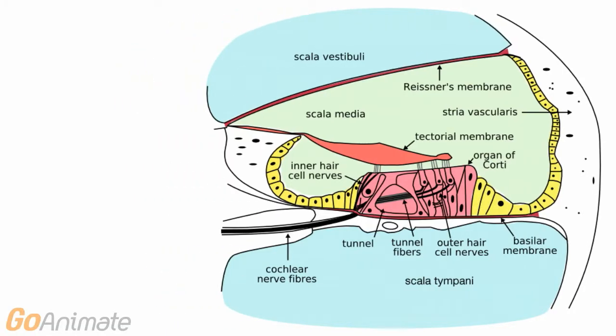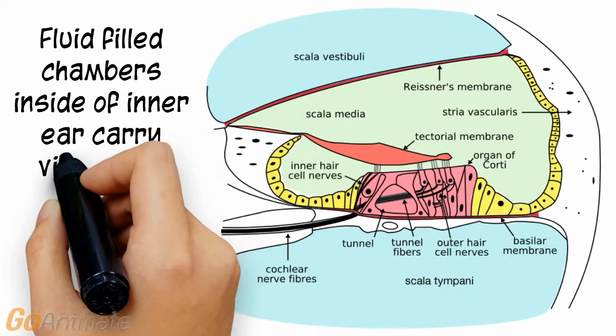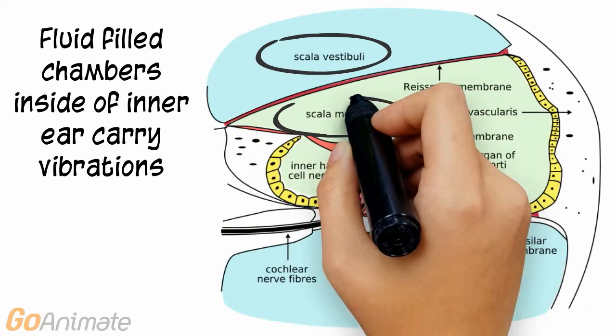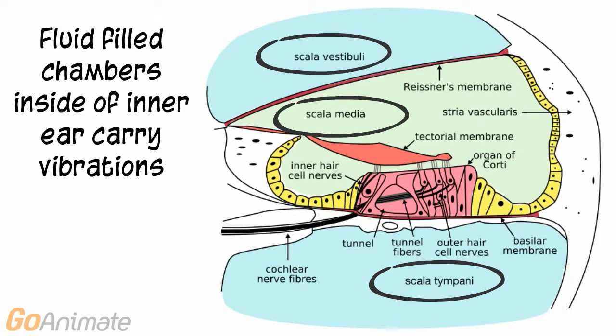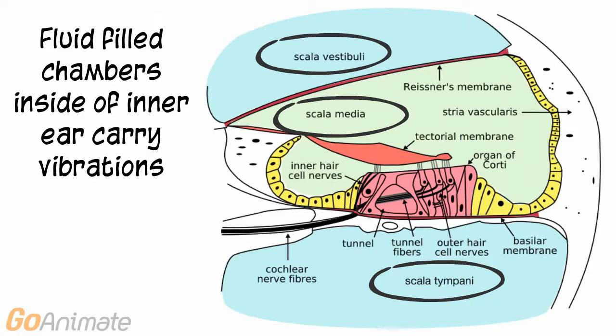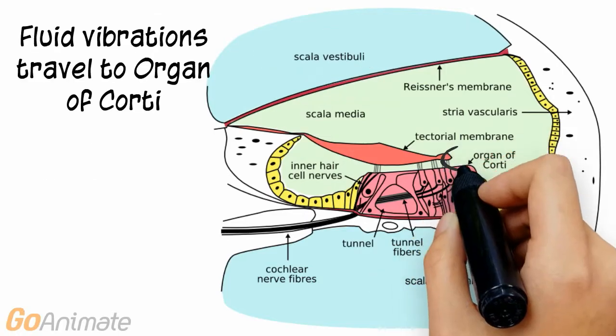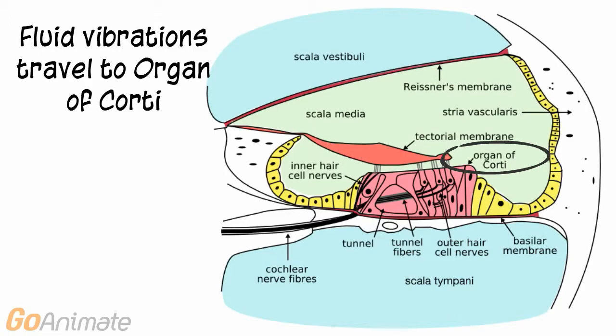Sound is further processed in the cochlea. There are three fluid-filled chambers inside of the cochlea: the scala vestibuli, scala media, and scala tympani. The vibrations at the oval window are transmitted through fluid.